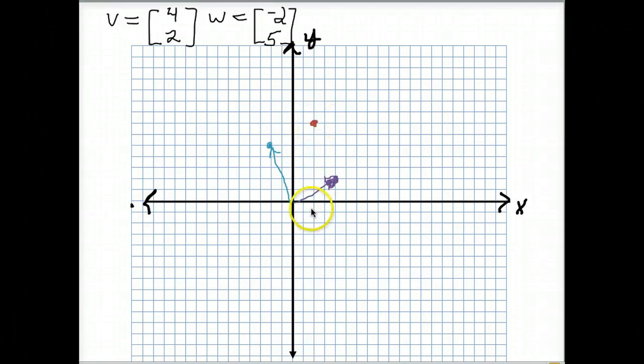So this vector, 2, 7, is the sum of v plus u.